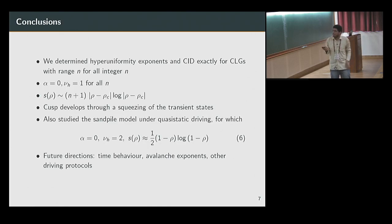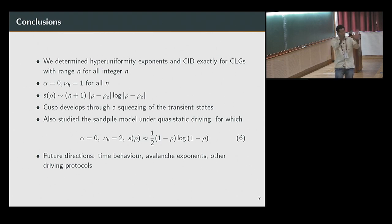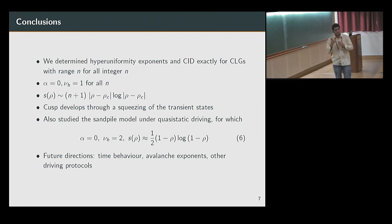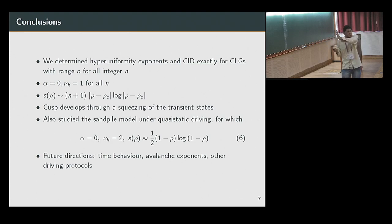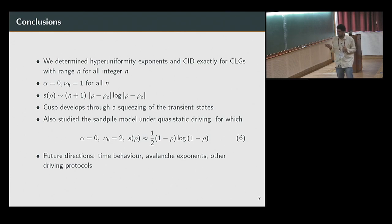Conclusions: alpha_D equal to zero and nu_h equal to one for all n, on both sides of the transition, where n is the range of the model. The entropy goes to zero as rho log rho. The cusp develops through a squeezing of the transient states. We also studied the sandpile model under quasi-static driving, for which the transition happens at rho equal to one, and you get nu_h equal to two, which is non-trivial — nu_h equal to one is more or less expected, but nu_h equal to two is non-trivial. And this is how the entropy goes to zero at rho equal to one. Thank you.